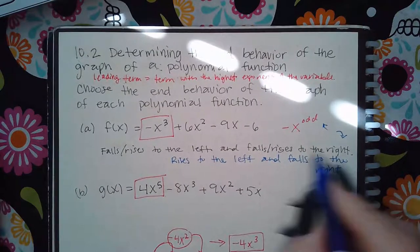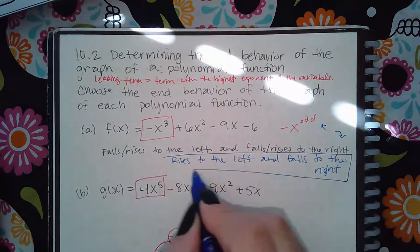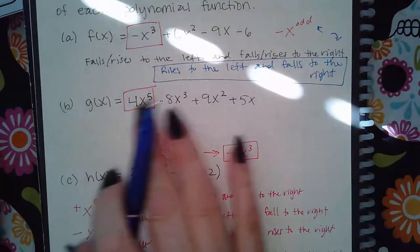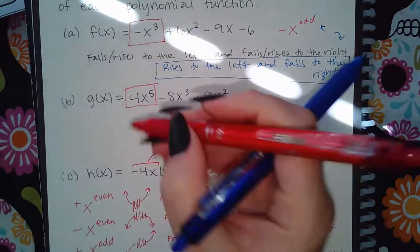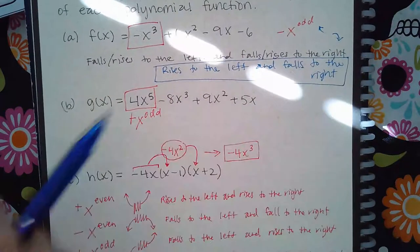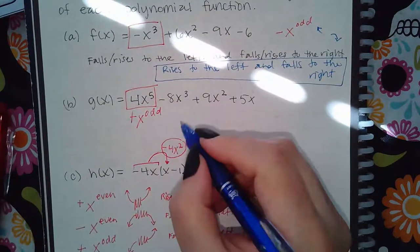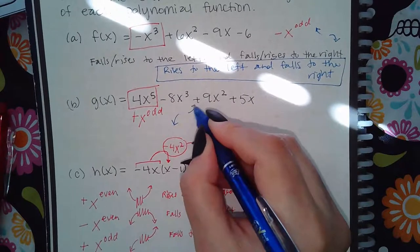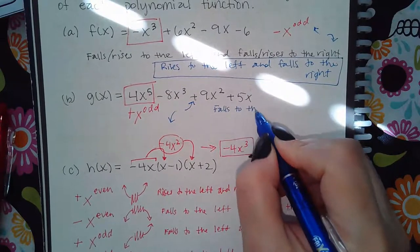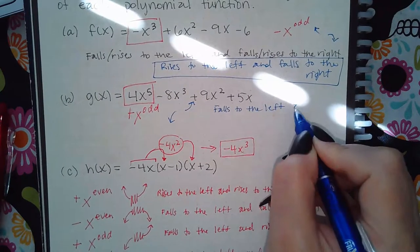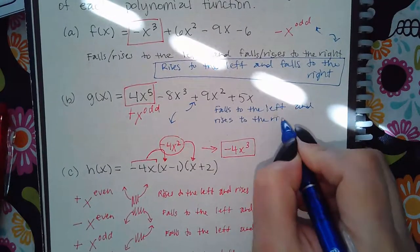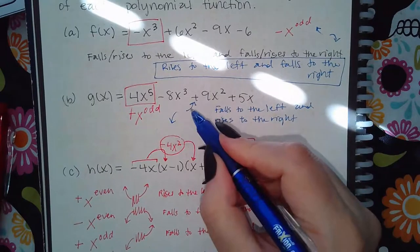For the next problem, this one has a positive coefficient but still an odd exponent. That end behavior goes down on the left and up on the right — so in words: falls to the left and rises to the right.